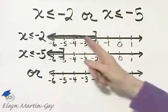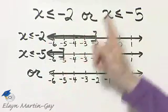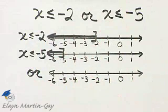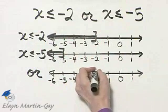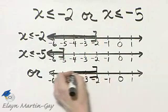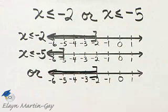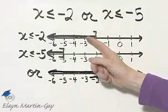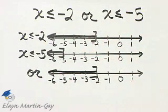So anything that is graphed on this number line or this number line should be graphed in the union. That means I would start with negative 2, put a bracket, and shade to the left. On this number line, I have graphed everything that's either on this number line or this number line.